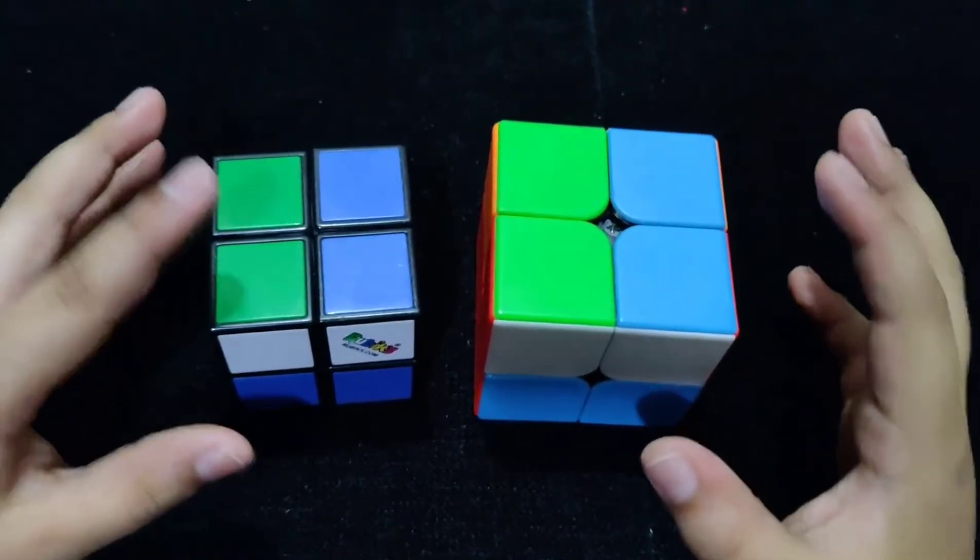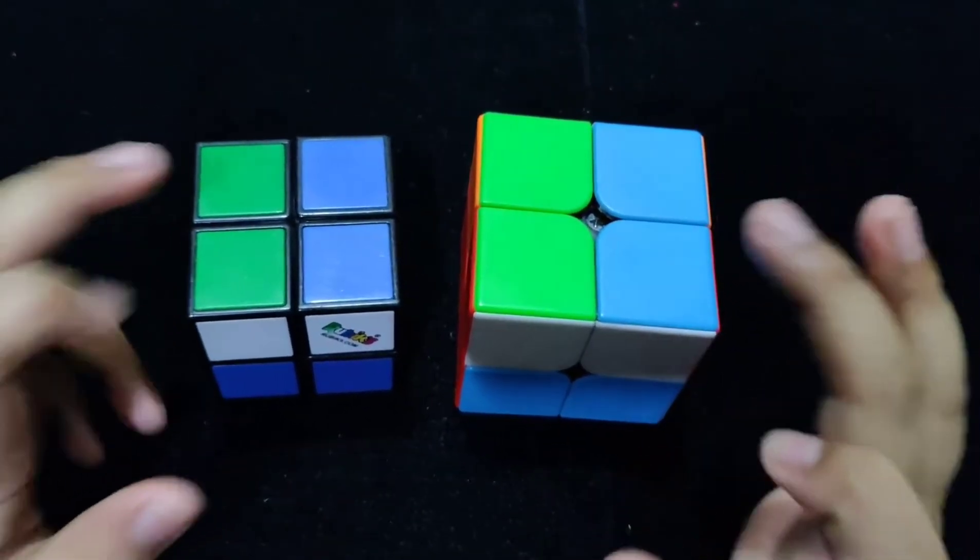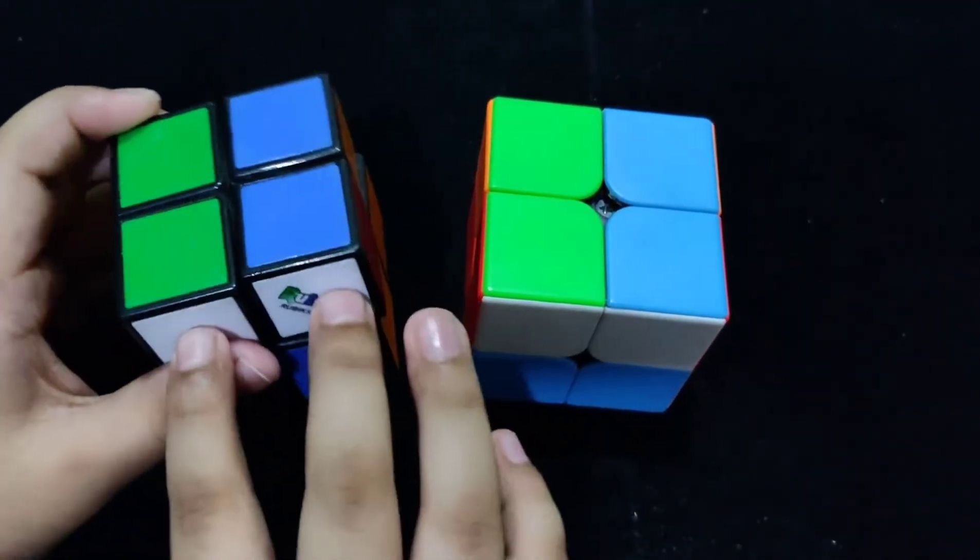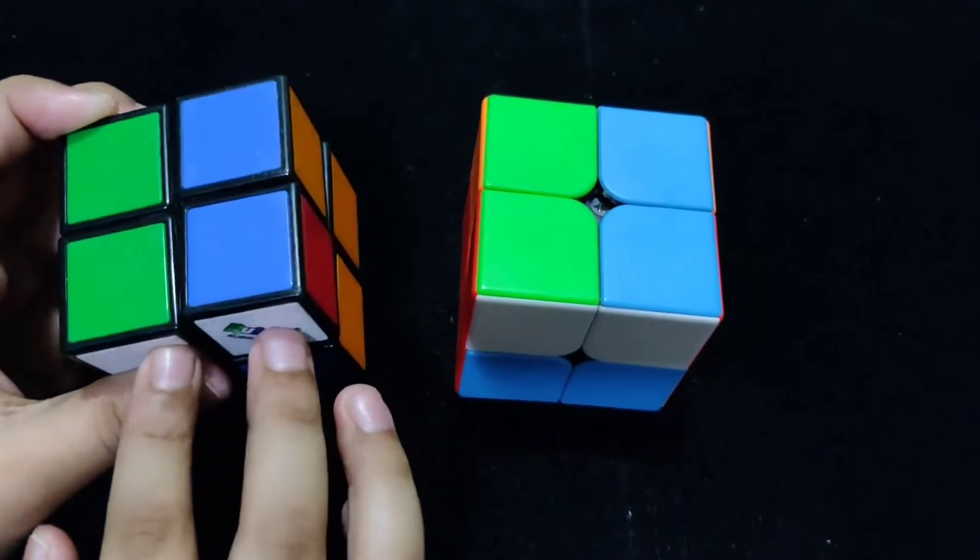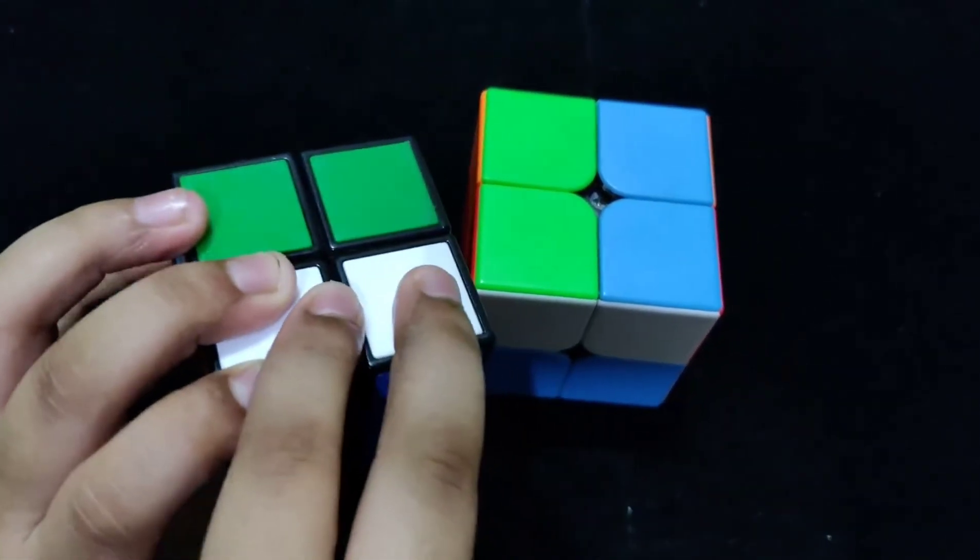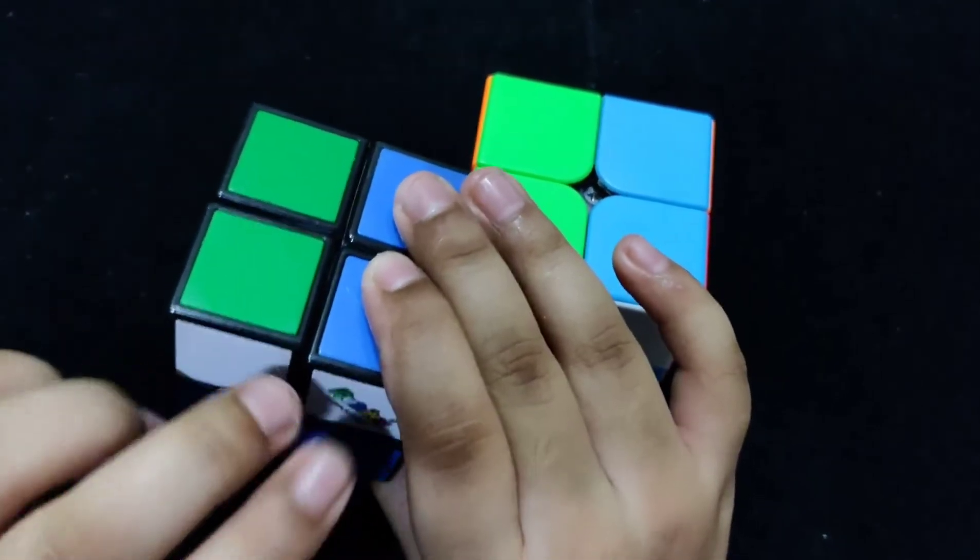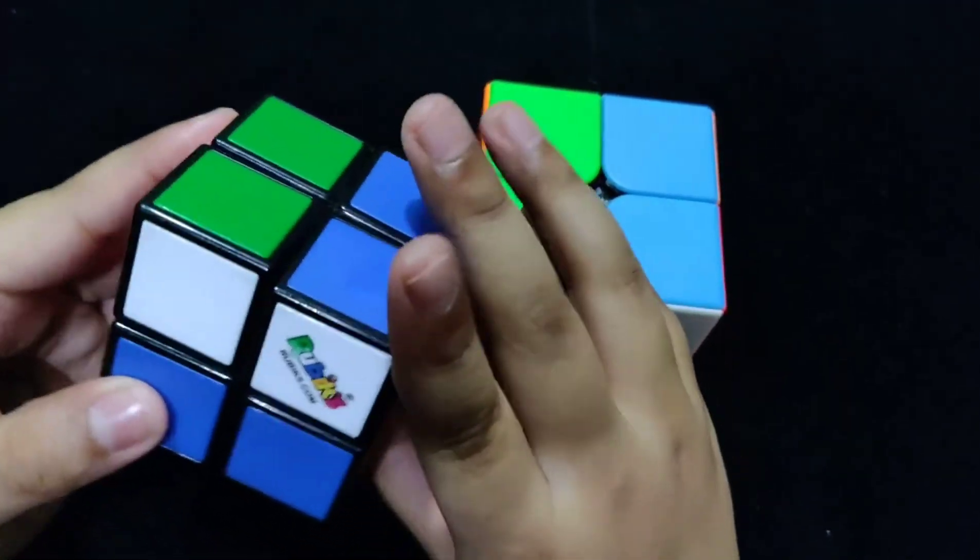The third and final case I am going to be showing you is the edge shape. For this, you will be having two corners together and two corners towards your back also together. So, hold the two corners towards you and do this algorithm.